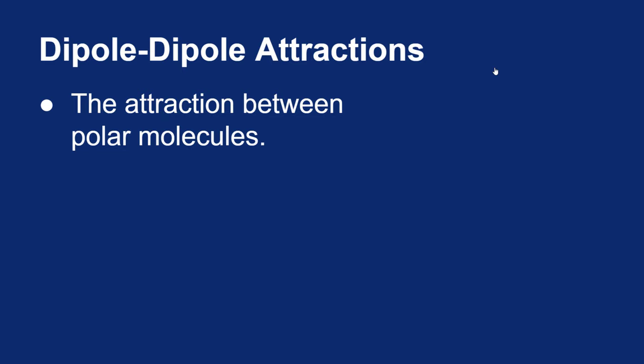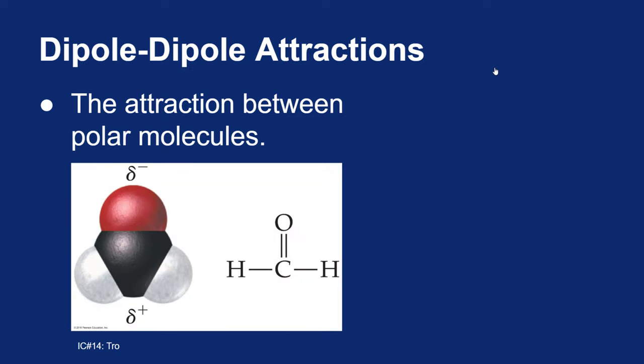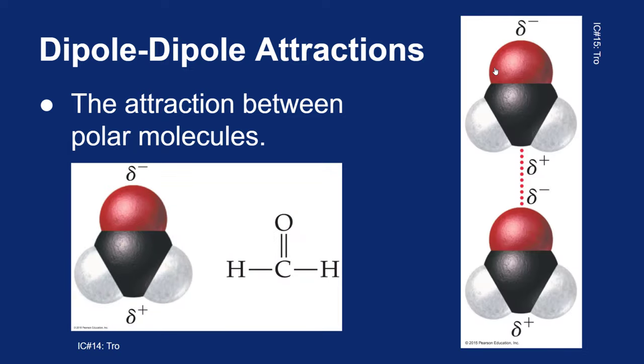We said already that polar molecules will attract each other. Polar molecules attract each other through dipole-dipole attractions. So if you have a molecule that has a positive side and a negative side, the negative side of one molecule will attract to the positive side of its neighbor. That's simply put a dipole-dipole attraction.